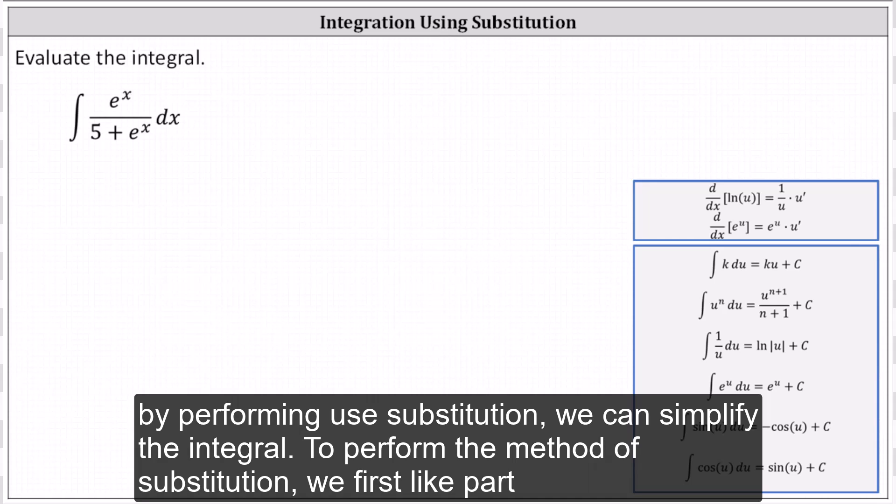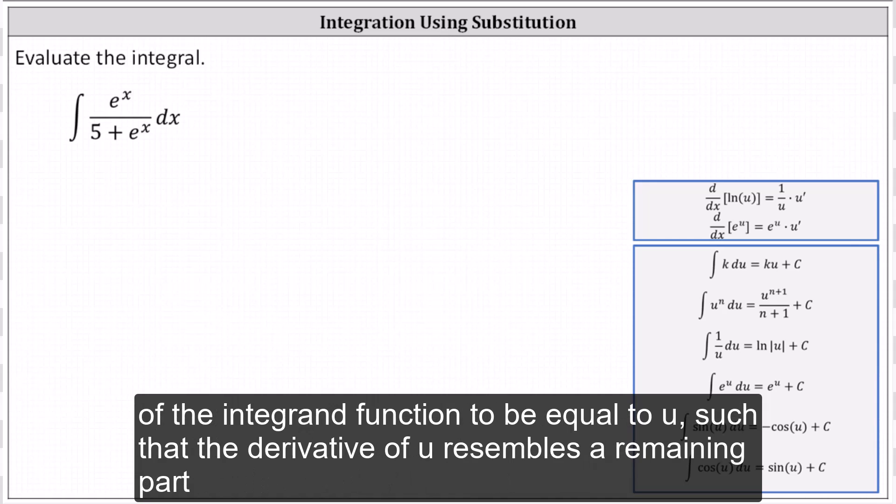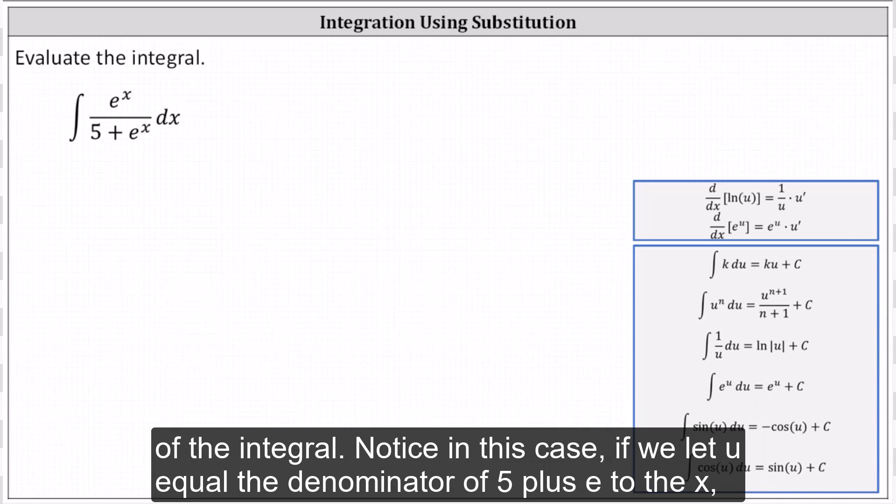To perform the method of substitution, we first select part of the integrand function to be equal to u, such that the derivative of u resembles a remaining part of the integral.